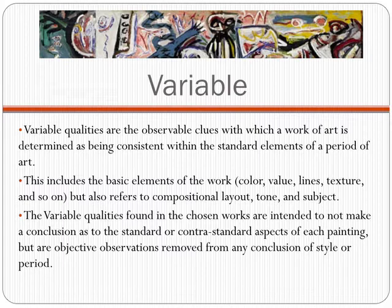Variable qualities are the observable clues with which a work of art is determined as being consistent within the standard elements of a period of art. This includes the basic elements of the work such as color, value, line, and texture. This category also includes compositional layout, tone, and subject. The variable qualities discussed in regards to the chosen works by Pollock, Rothko, and de Kooning are intended to not make a conclusion about the standard or contra-standard aspects of each painting, but are objective observations removed from any conclusion of style or period.